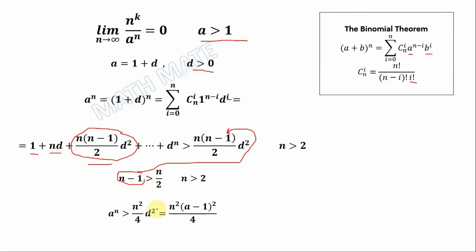So we have this type of expression, and we plug in d equal to a minus 1 by using this equality. Finally, we have a to the power of n is more than n squared multiplied by a minus 1 whole squared, over 4. We will use this inequality in our further proof.